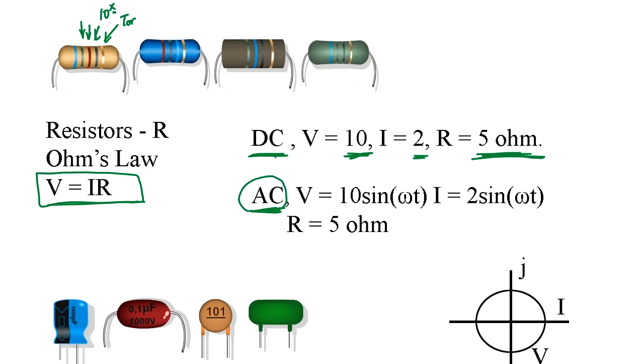Now what is AC? AC is like a sine wave signal. So voltage is 10 sine omega t. And omega is a frequency. For our system, most of nations use 50 to 60 hertz for alternate current. And current is 2 sine omega t. So resistance is 5 ohms. That's simple.